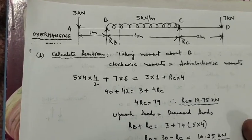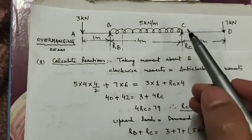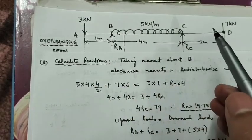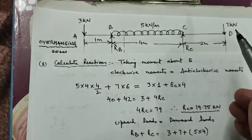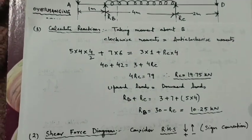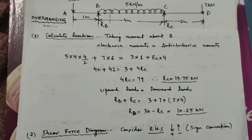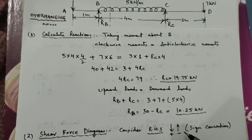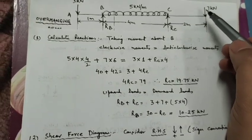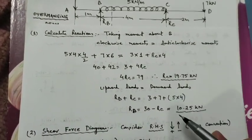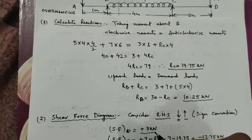After calculating the reactions, we will find the shear force at various points D, C, B, and A using the sign convention, considering either the right-hand side or left-hand side of the beam. We will consider the right-hand side of the beam. For the right-hand side, all downward forces are taken as positive and all upward forces as negative. Starting from point D, the downward force is 7 kN, so the shear force at point D is plus 7 kN.